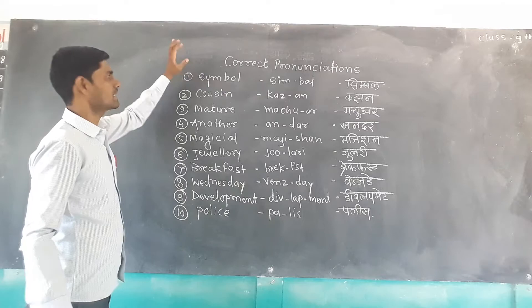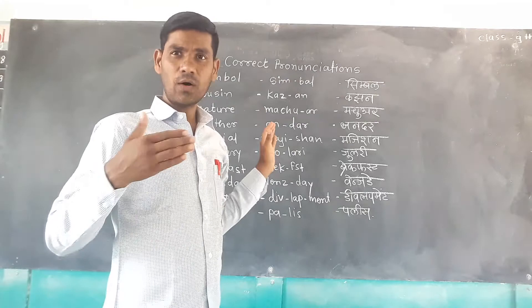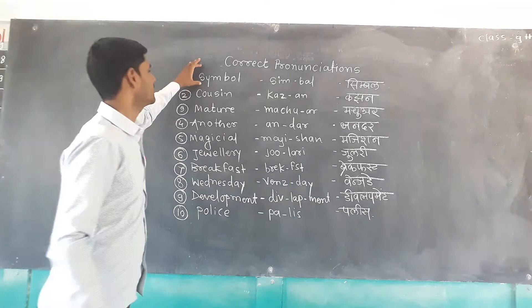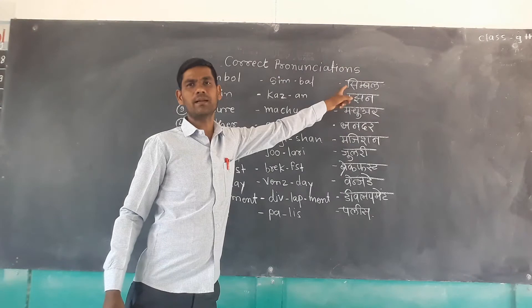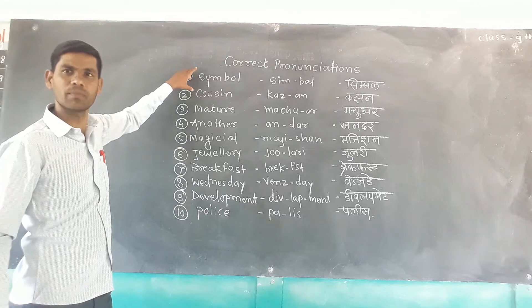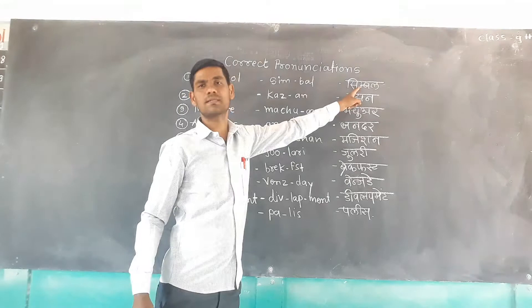The first word — usually we pronounce it as 'symbol,' but this is not the correct pronunciation. The correct pronunciation is 'symbol.' We say 'symbol,' but that is not correct. The correct pronunciation is 'symbol.'